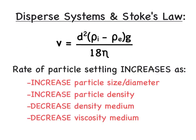What this tells us is that the rate of particle settling will increase as we increase particle size or diameter, or increase particle density. Increasing either of those first two parameters will increase the rate of settling. We will also increase particle settling if we decrease the density of the medium or decrease the viscosity of the medium in the denominator — either of those approaches will result in an increase in the rate of particle settling.